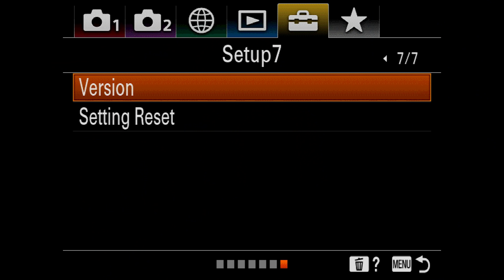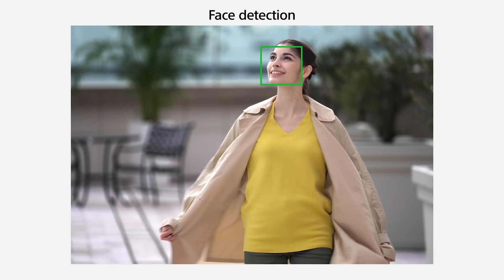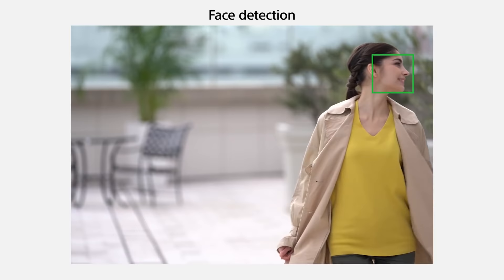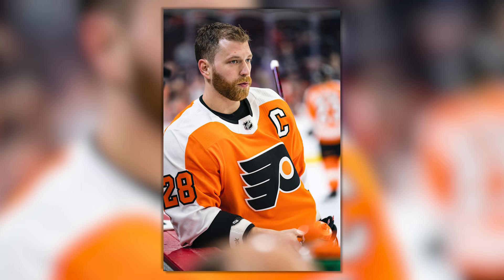Jared Polin, froknowsphoto.com. In this video I want to show you some real world examples of using the new Sony A9 version 5.0 firmware, which gives you real time tracking along with real time IAF. In the past I had to hold down a back button and then the shutter button to track the eye. Now I hold the shutter button halfway down and it locks on to the subject, tracking them and finding the eye when they get close enough.